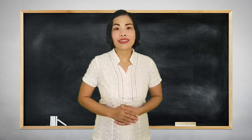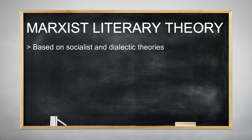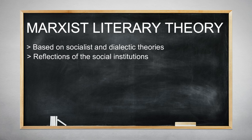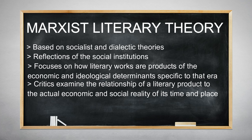So what is Marxist literary approach? Marxist literary approach is a loose term describing literary criticism based on socialist and dialectic theories. It views literary works as reflections of the social institutions. Marxist literary approach focuses on how literary works are products of the economic and ideological determinants specific to that era. Critics examine the relationship of a literary product to the actual economic and social reality of its time and place.